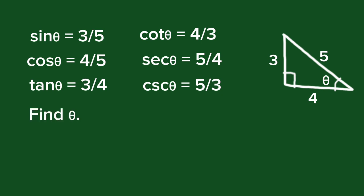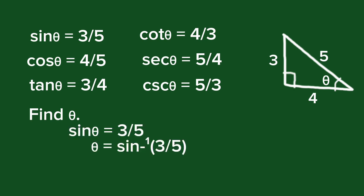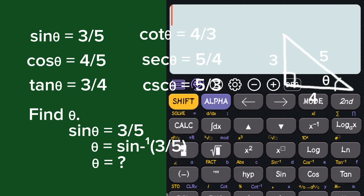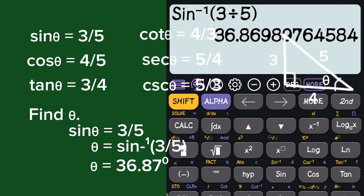If we are asked to find angle theta, we use sine theta equals 3 over 5. Theta is equal to sine raised to negative 1 of (3 over 5). Let's use the calculator to find theta. Press shift, then sine, and input 3 over 5. Theta is equal to 36.87 degrees. That's the angle.